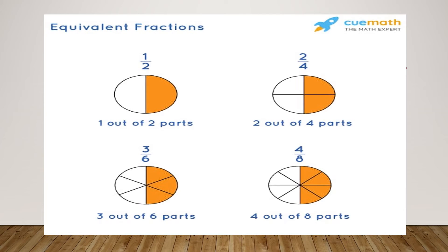Let us see another example children. Here, 4 circles as you can see over here. The first one represents half. The second one represents 2 by 4 because 4 parts are there.